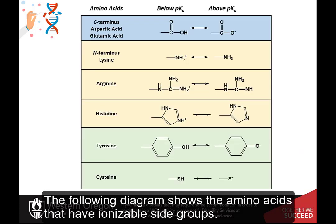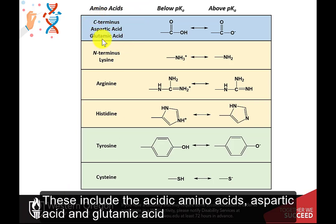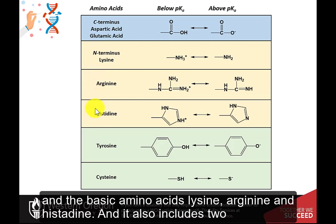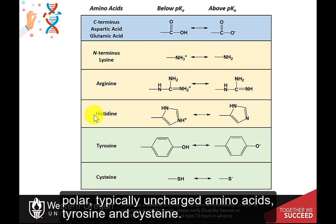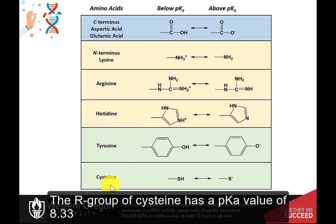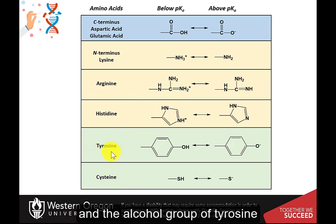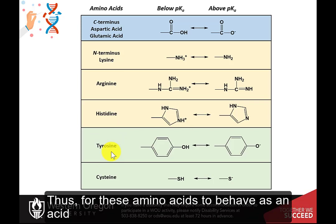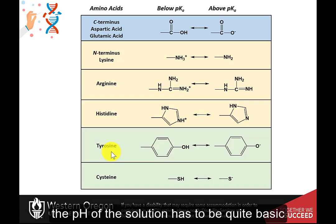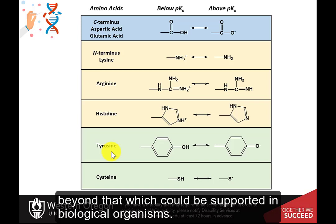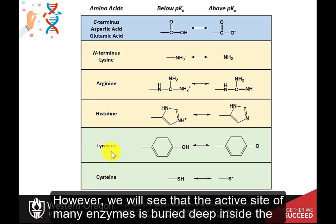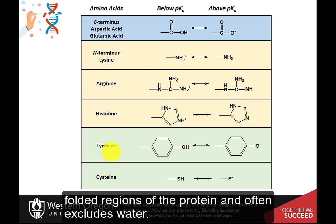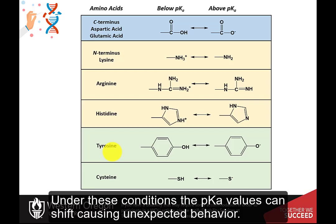The following diagram shows the amino acids that have ionizable side groups. These include the acidic amino acids aspartic acid and glutamic acid, the basic amino acids lysine, arginine, and histidine, and also two polar, typically uncharged amino acids, tyrosine and cysteine. The R group of cysteine has a pKa value of 8.33, and the alcohol group of tyrosine has a pKa of 10.07. Thus, for these amino acids to behave as an acid, the pH of the solution has to be quite basic, beyond that which could be supported in biological organisms. However, we will see that the active site of many enzymes is buried deep inside the folded regions of the protein and often excludes water, and under these conditions the pKa values can shift, causing unexpected behavior.